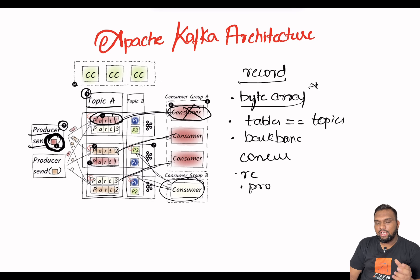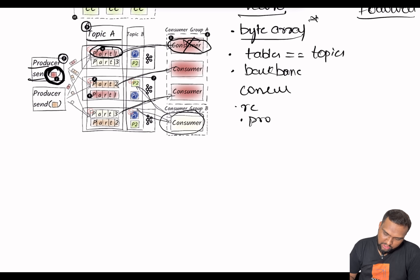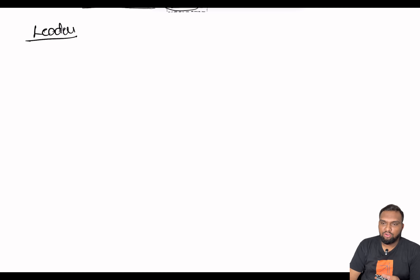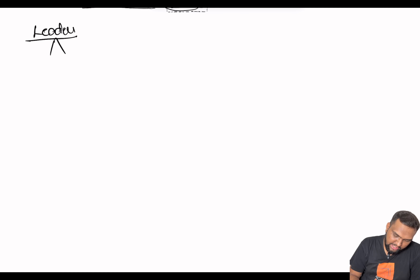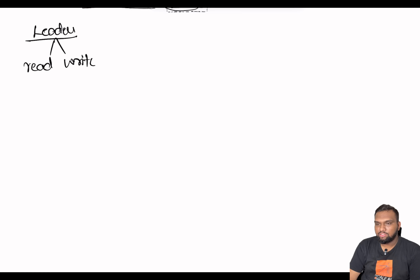Within brokers, we have something called leaders and followers. Leaders are the brokers responsible for read and write operations of a partition — both reads and writes — which is very crucial. Leaders are distributed as evenly as possible among all the brokers present in the Kafka cluster.